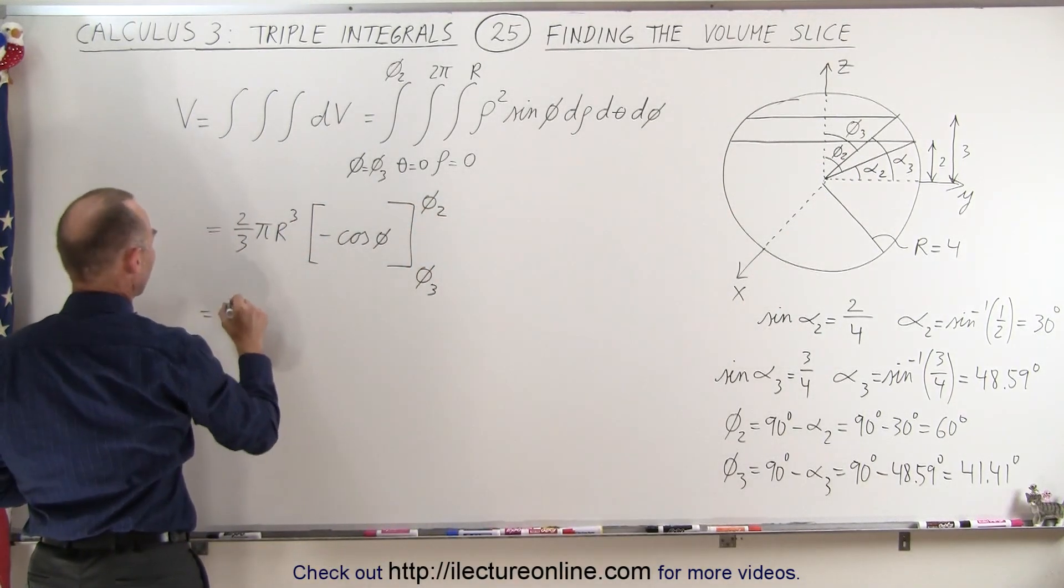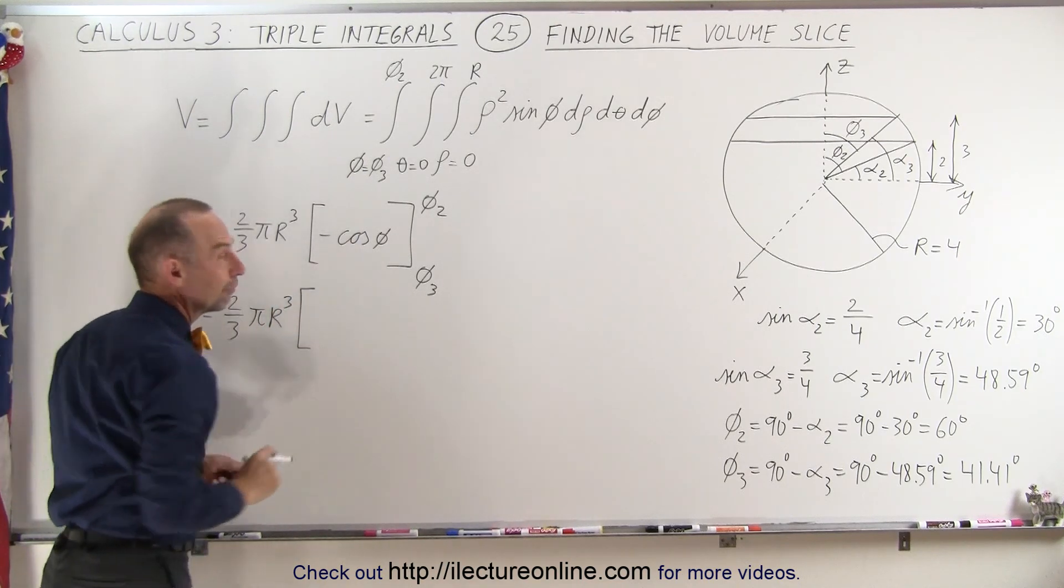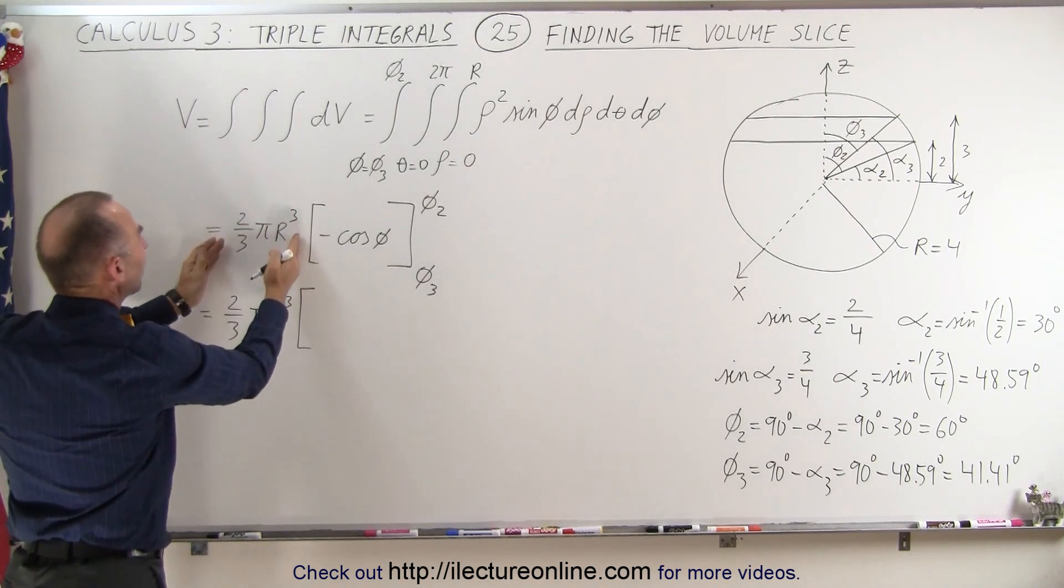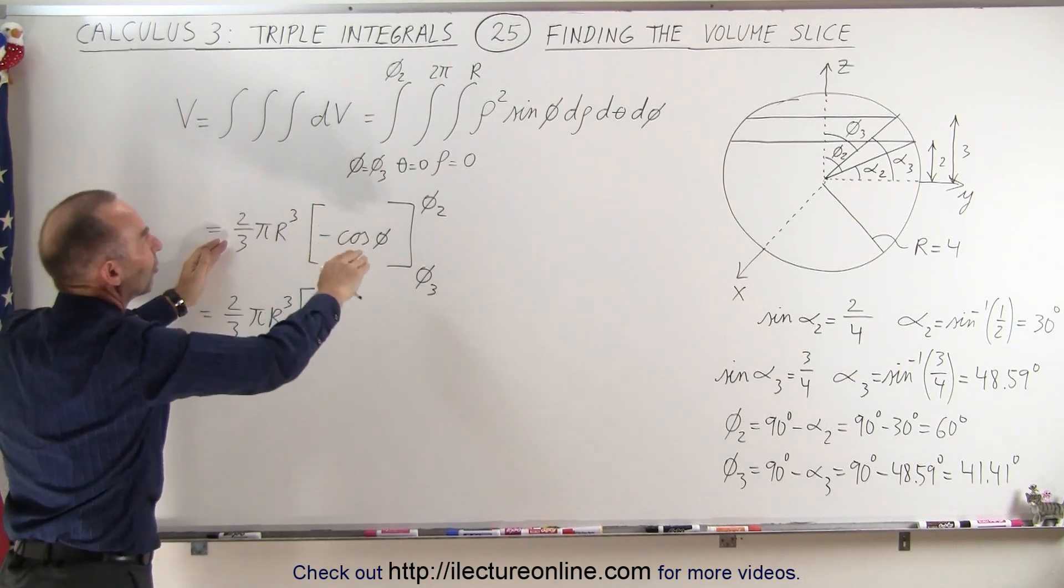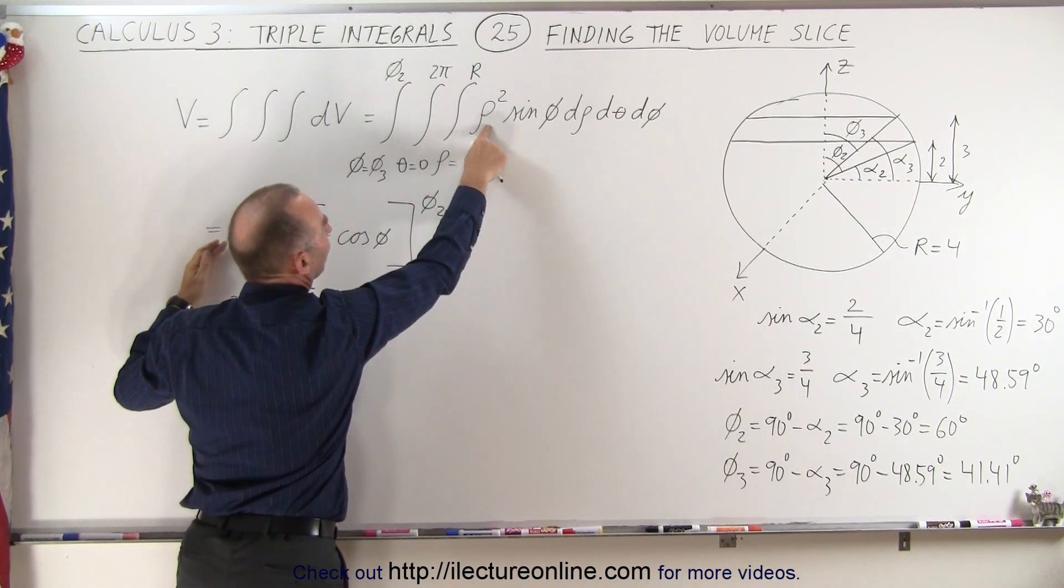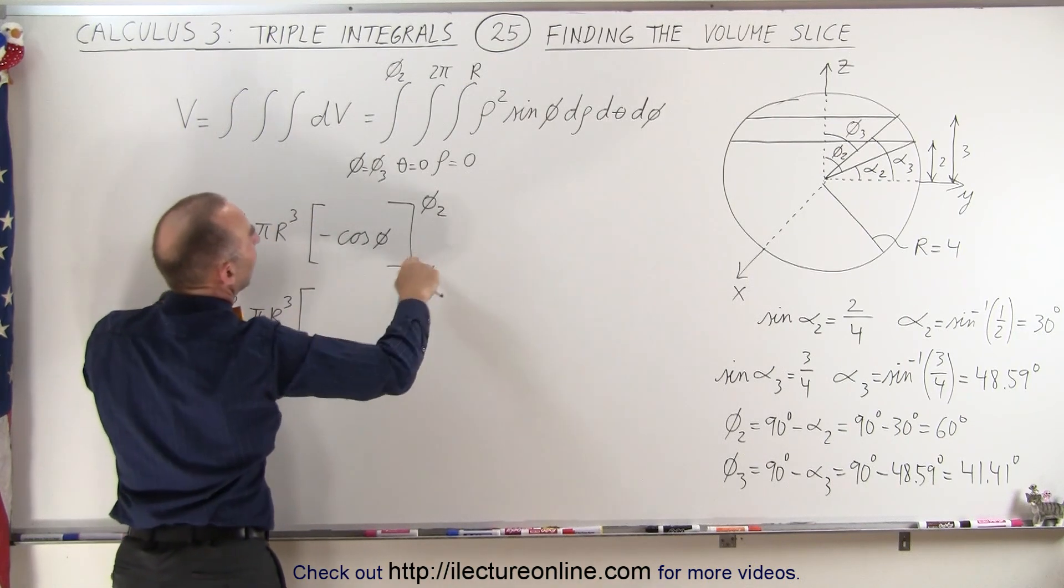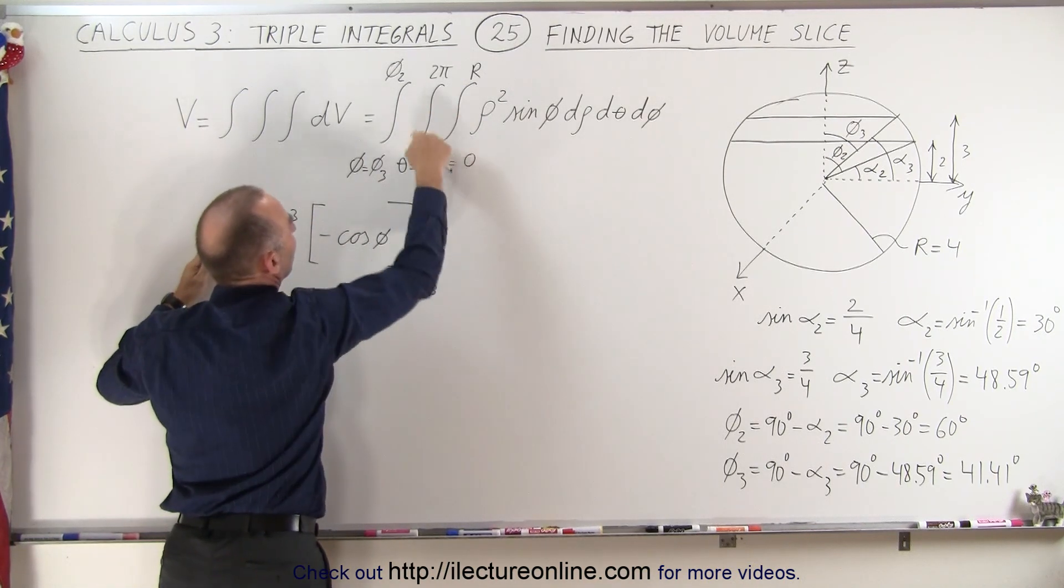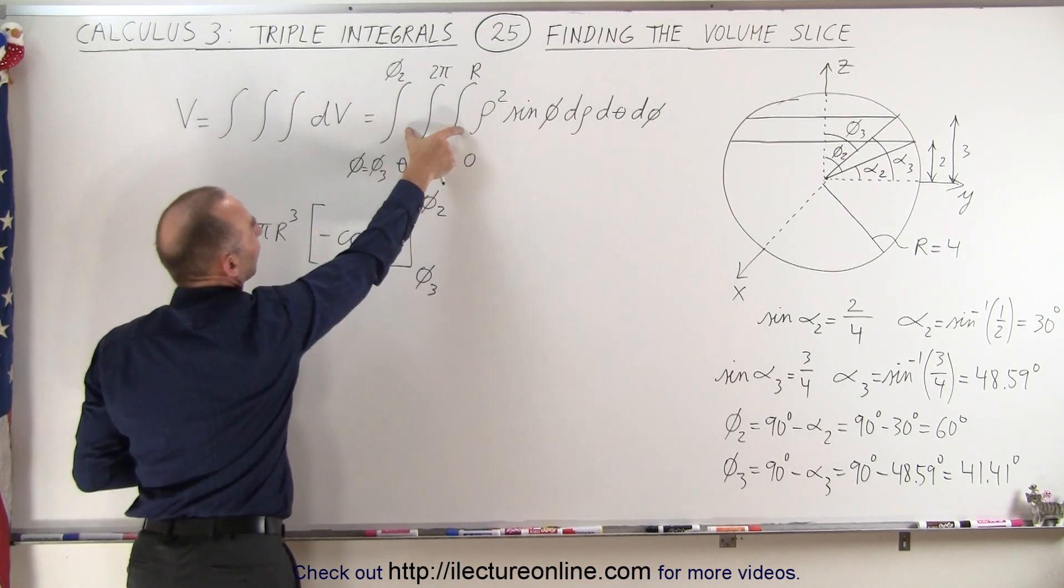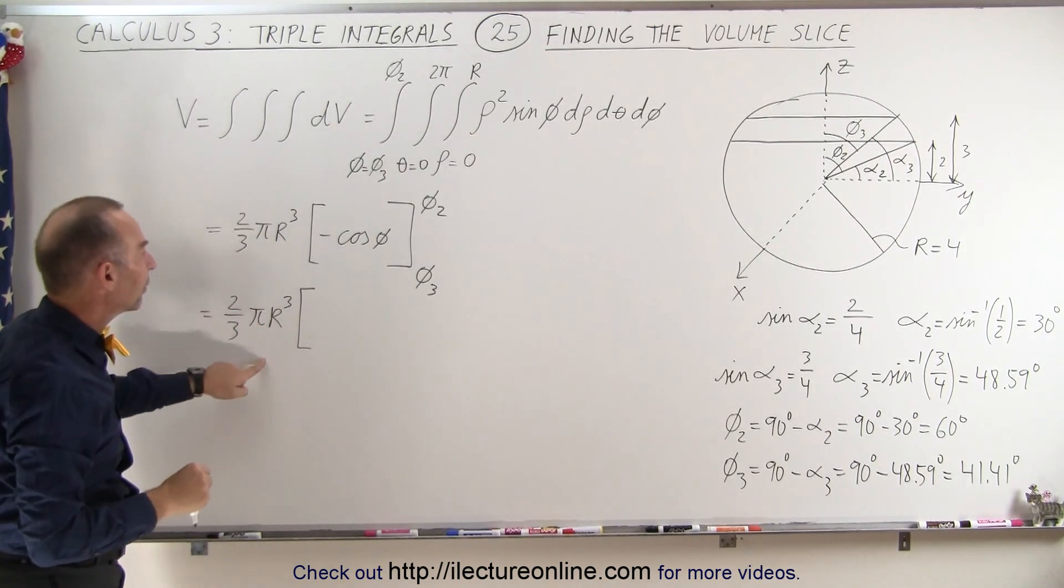Now for those who look at this video and go where in the world did he get this from, well we've done already a few examples like this. So know that we integrate from 0 to r over ρ². We get ρ³ over 3 which gives us the r³ over 3. And then we integrate from 0 to 2π over the angle theta. We get the 2π. That's where the first two integrals give us the 2/3 π r³.